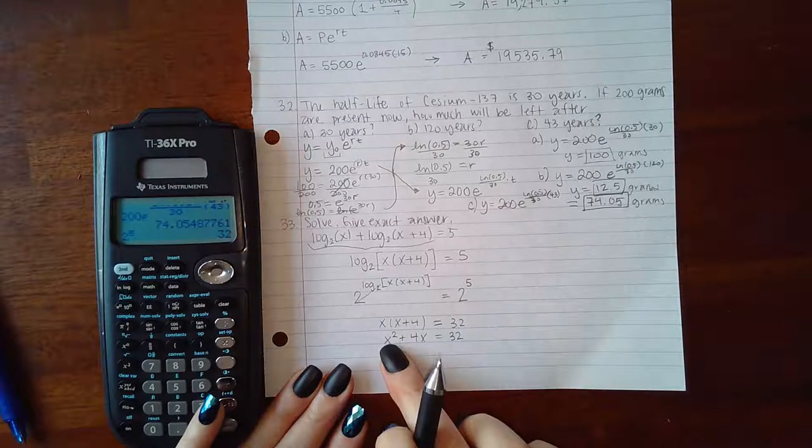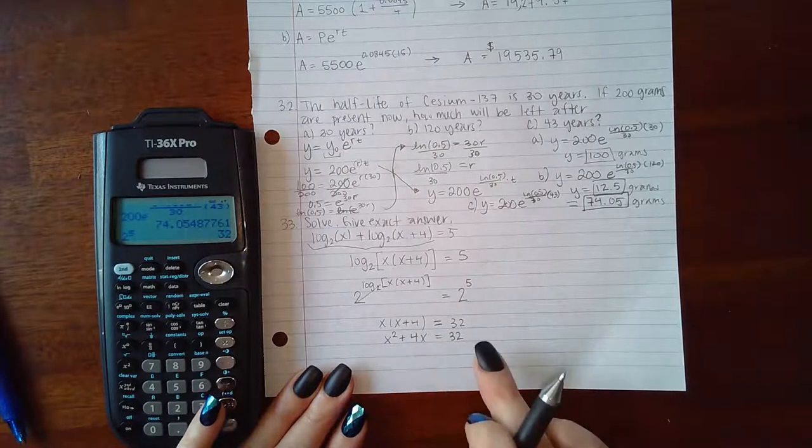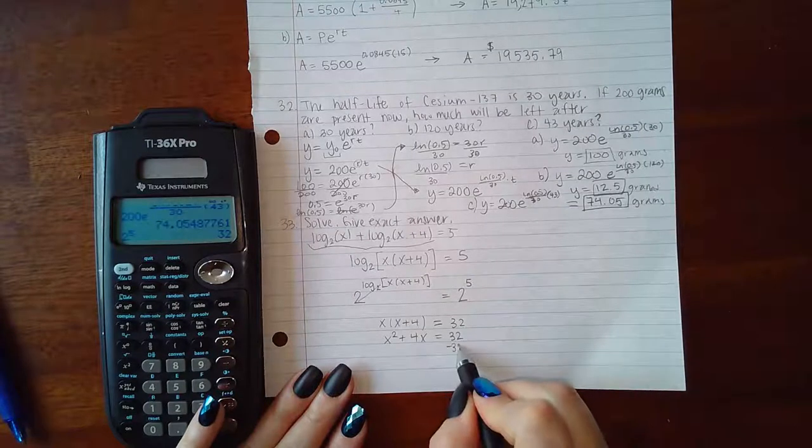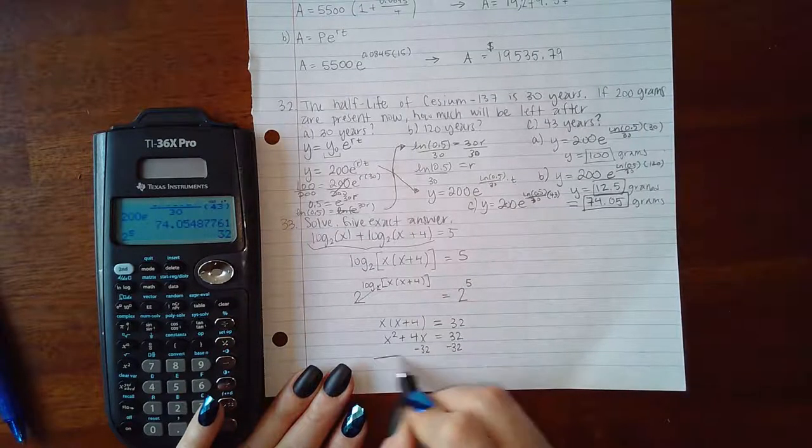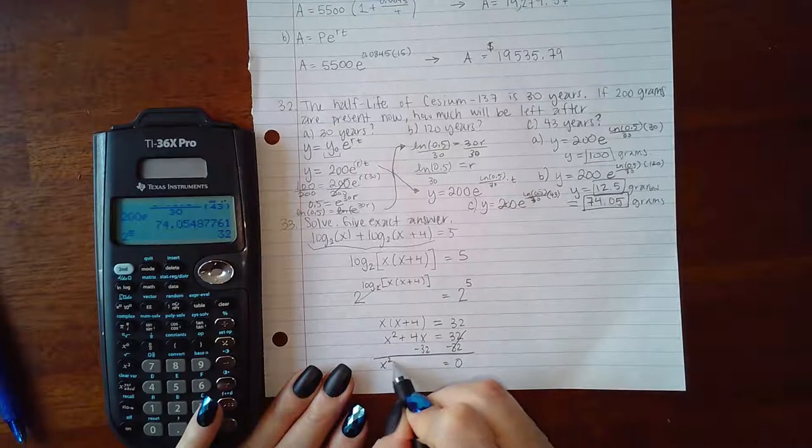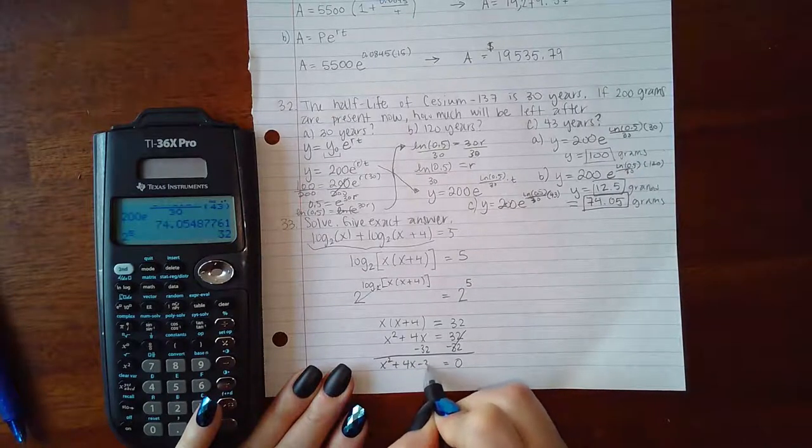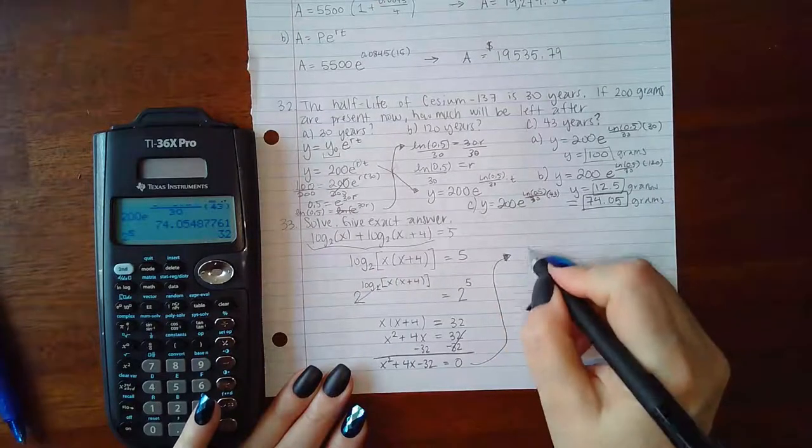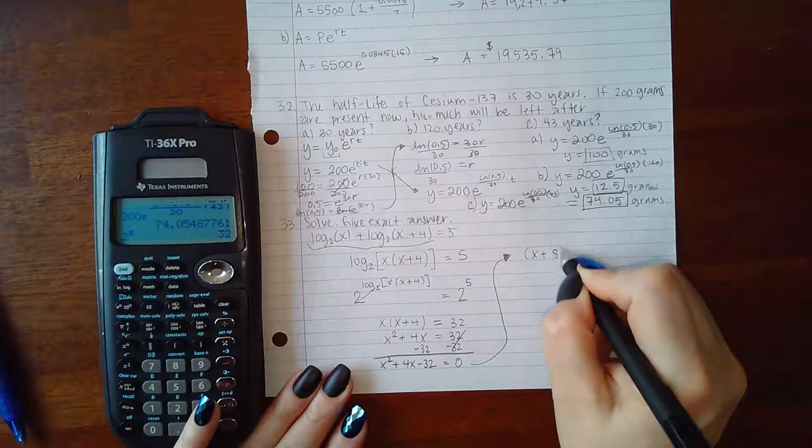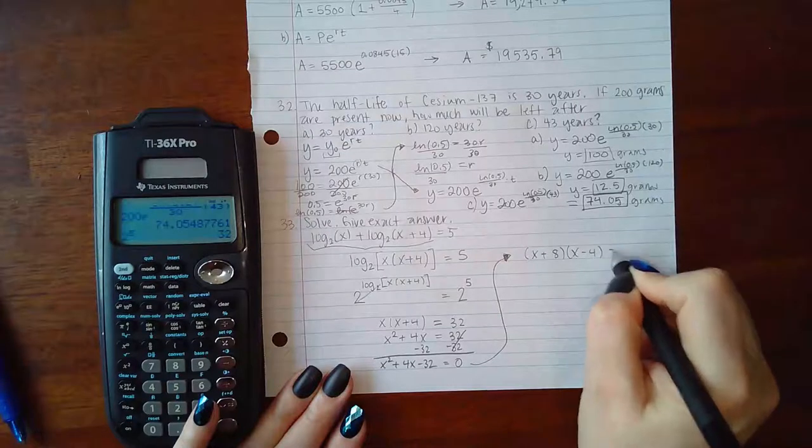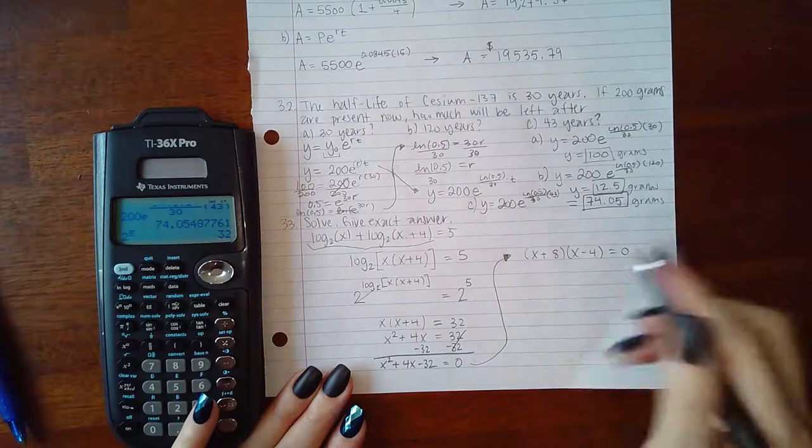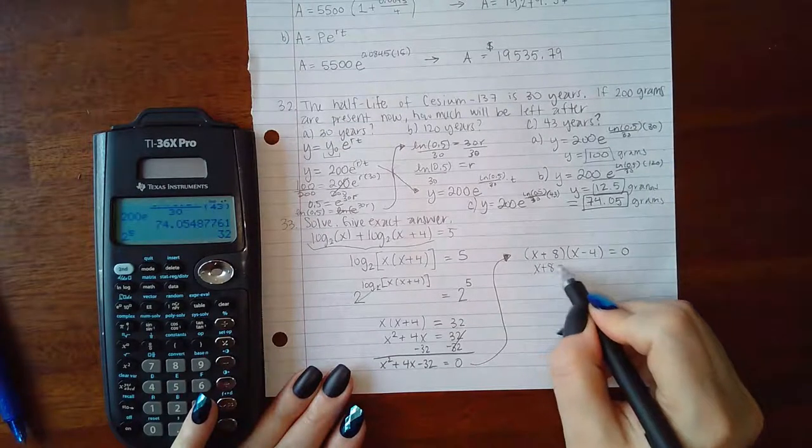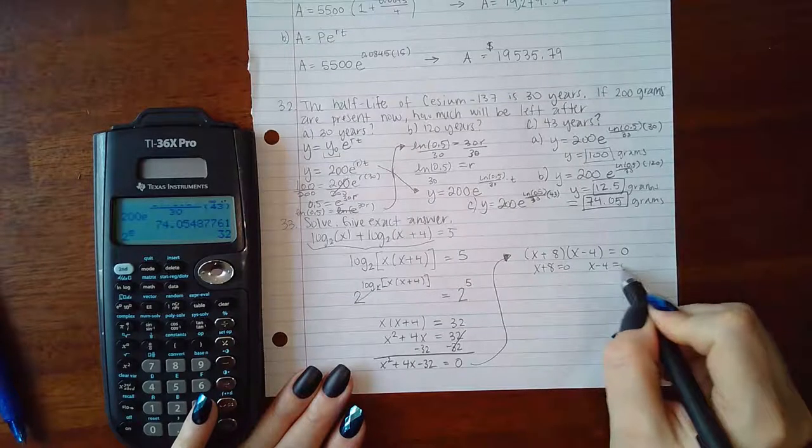If I distribute x, I get x² + 4x = 32. This is a quadratic equation, which means I do have to have it equal to 0, so we have x² + 4x - 32. If I factor that, I get (x + 8)(x - 4) = 0.